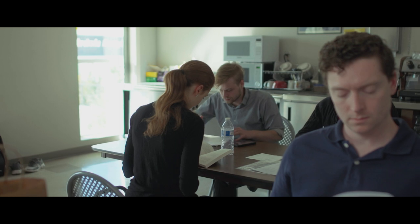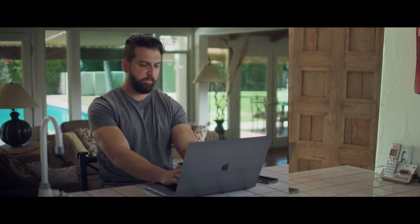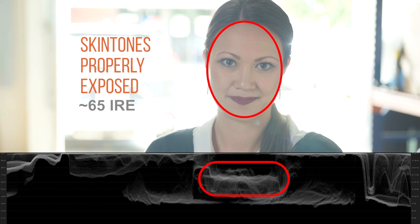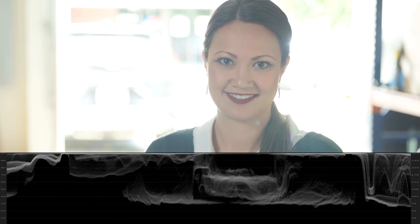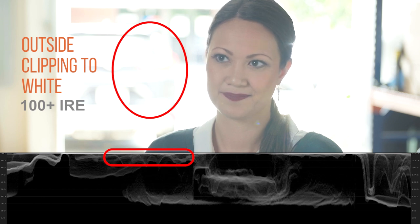Oftentimes you're going to have to shoot your subject against a window or an open door like this, and that's going to create not only an exposure problem, but also a problem with matching the color temperatures of your light sources. In this example, I'm framing Jenny, but I have my exposure set for her skin tones. Because of the difference in the brightness of light, you notice how grossly overexposed the outside is — it looks like she's in heaven or in a nuclear apocalypse. And we don't necessarily want that for this particular shot.